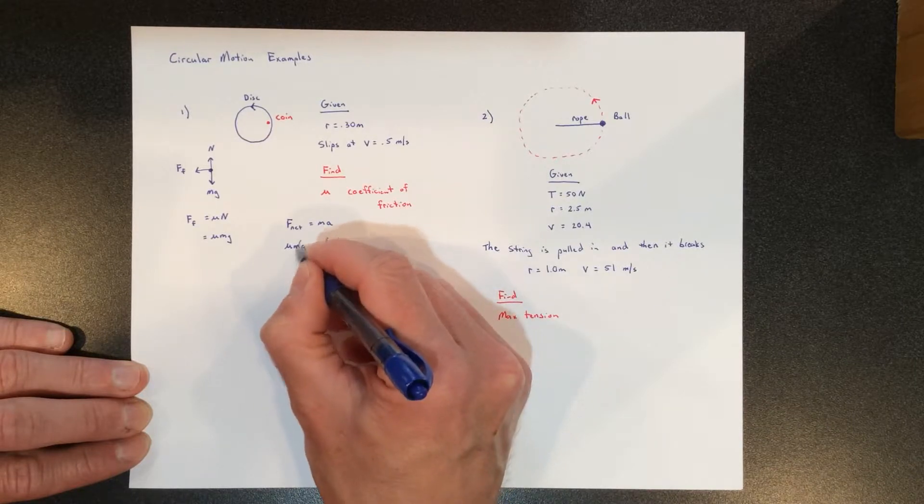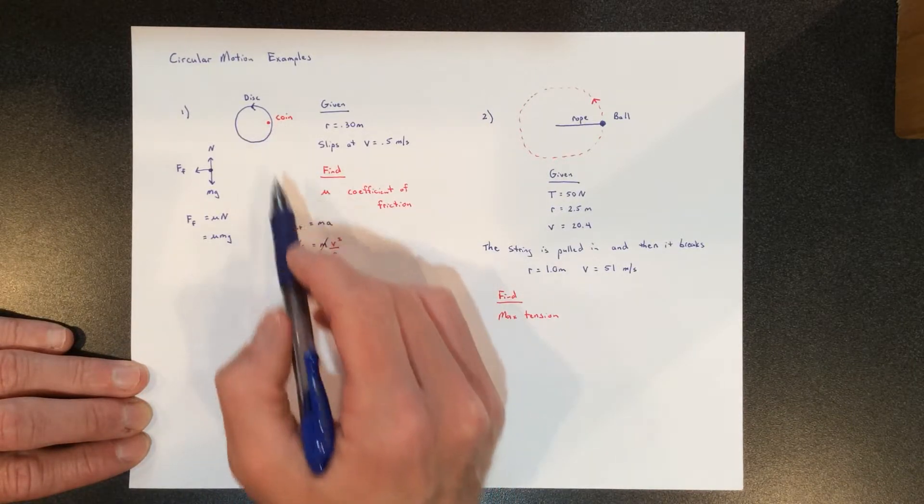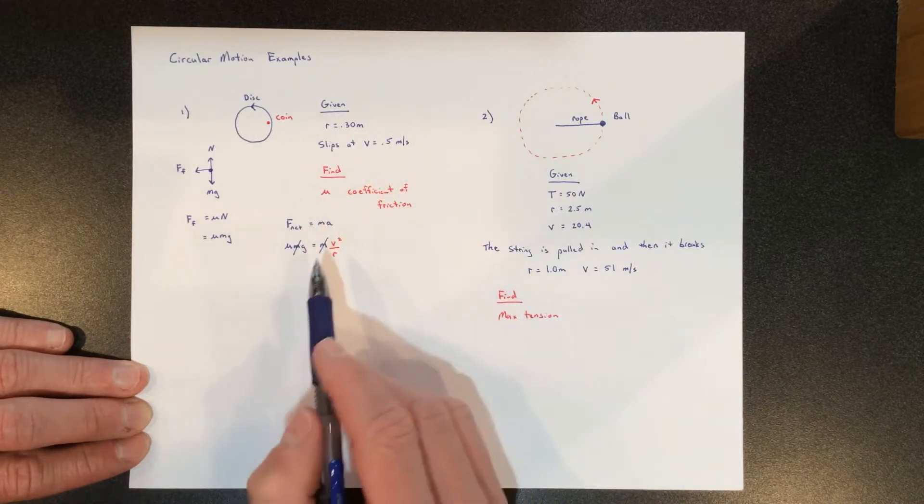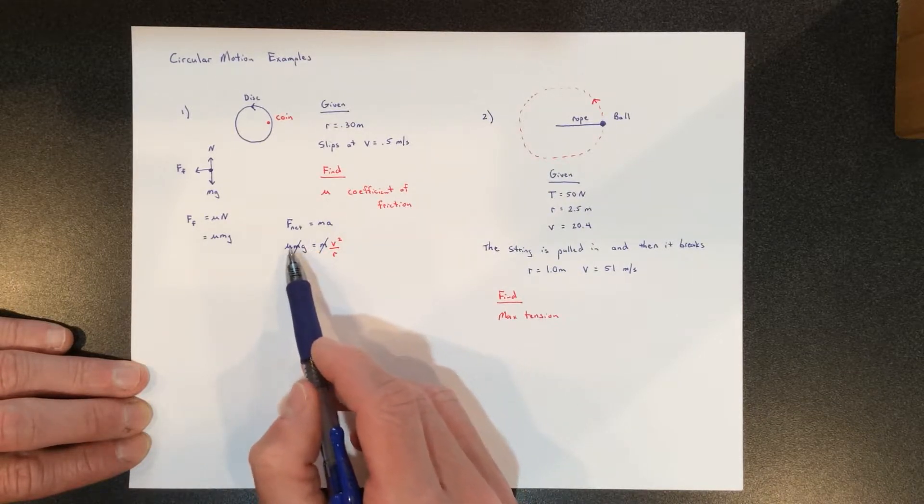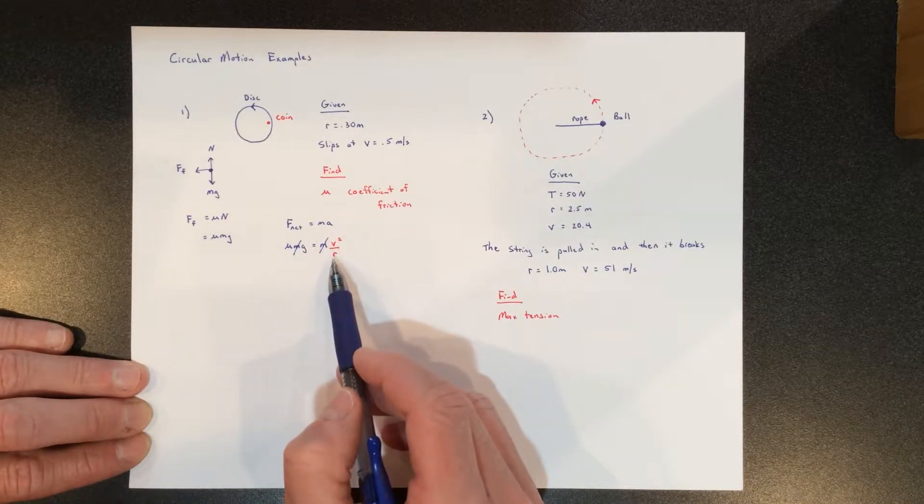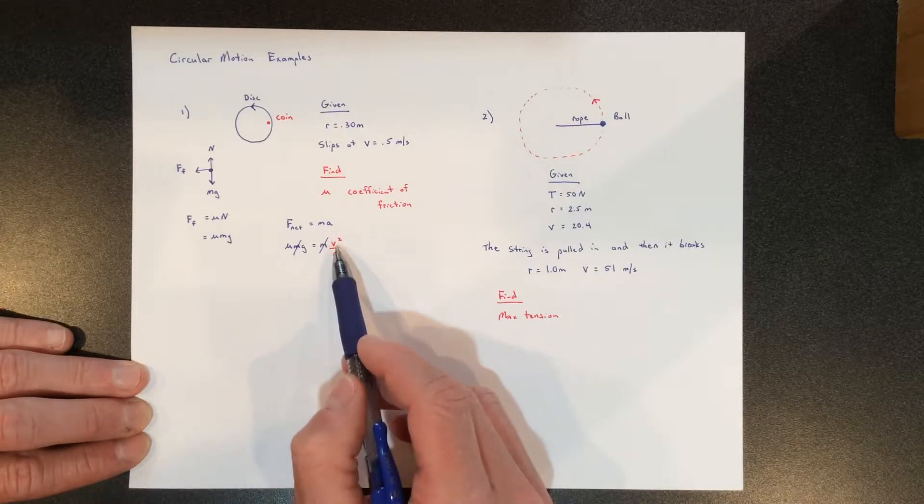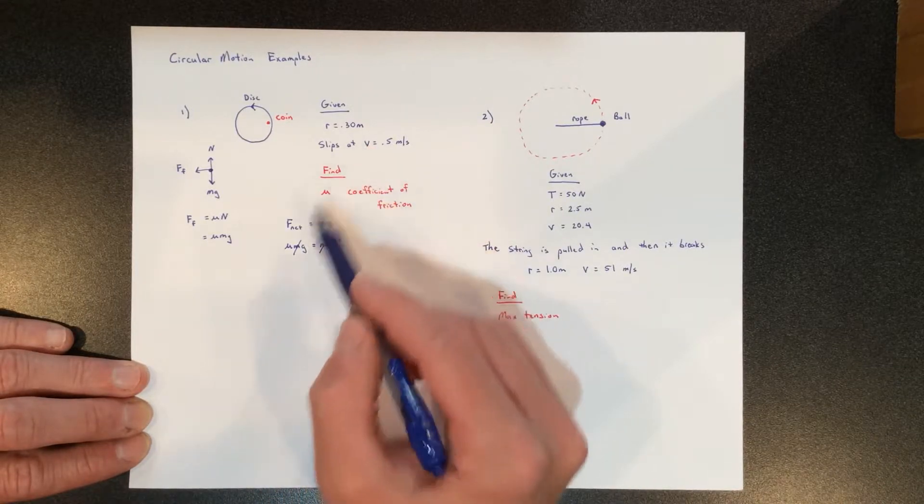We can notice that the two masses cancel, which says that the mass of the coin has no effect on this. At this point, we want to find mu, and we know g, we know v, and we know r. We know the specific velocity and radius at which it slips.